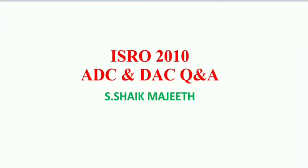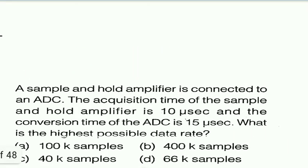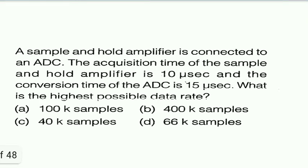Hi friends, in this video we see the questions which have been asked in ISRO 2010 in ADC and DAC area. The first question is: a sample and hold amplifier is connected to an ADC. The acquisition time of the sample and hold amplifier is 10 microseconds, and the conversion time of the ADC is 15 microseconds. What is the highest possible data rate?